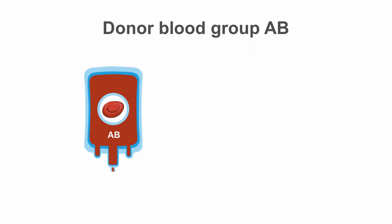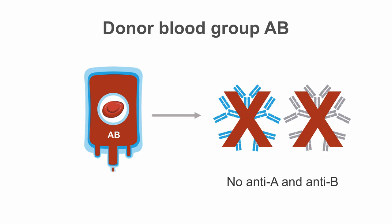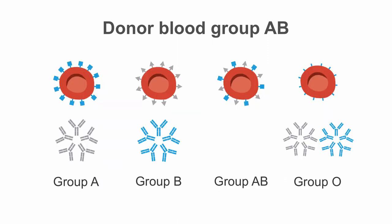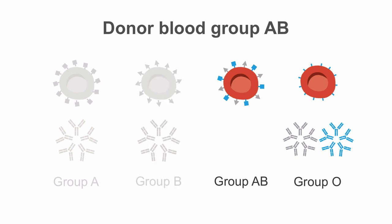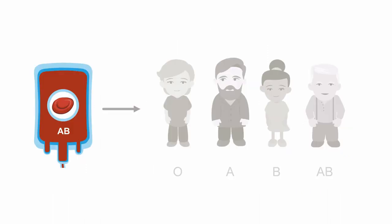And RBC units of blood group AB — who can receive those? We have to avoid both anti-A and anti-B antibodies. Group A is a no-go, group B is a no-go, and group O is a no-go. That leaves only group AB. So AB donor blood can only be given to patients with group AB blood.